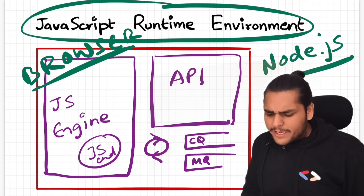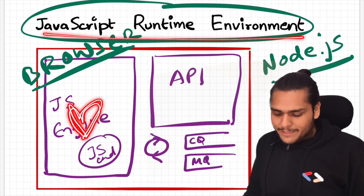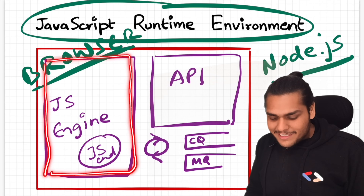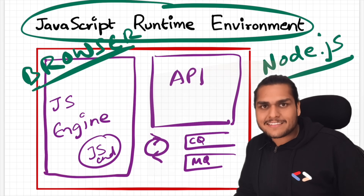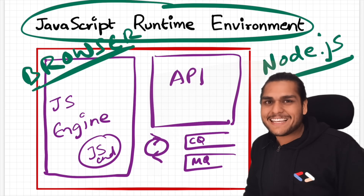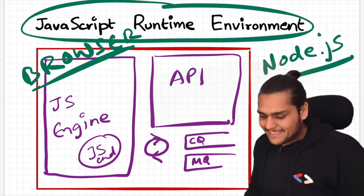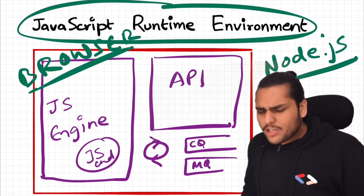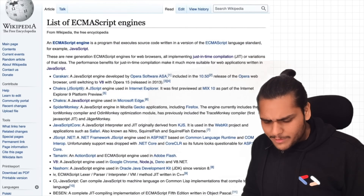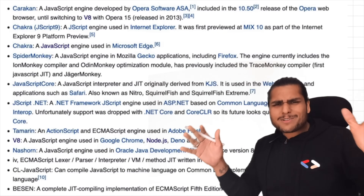We already know that the JavaScript engine is the heart of the JavaScript runtime environment. Let us now dive deep inside the JavaScript engine and see what happens inside it — there are a lot of awesome things happening. Before moving on to the architecture, let me show you the list of JavaScript engines available. On Wikipedia, you can find that there are a lot of JavaScript engines.